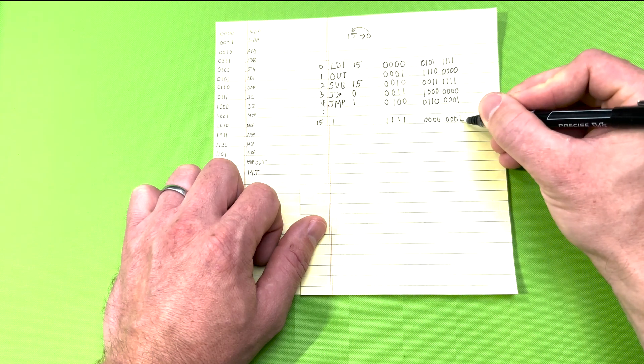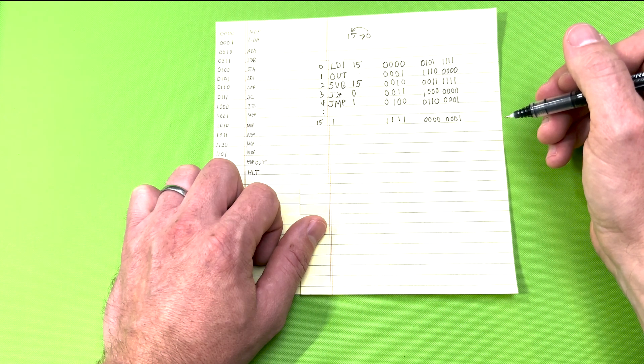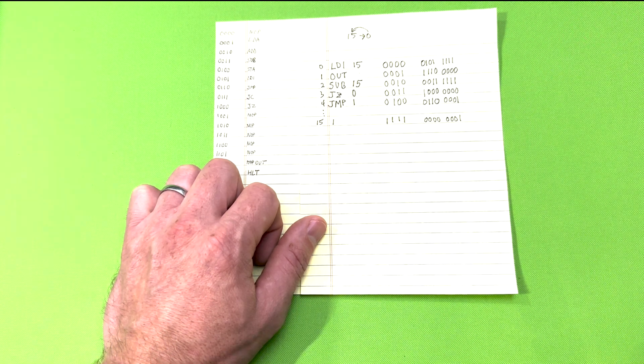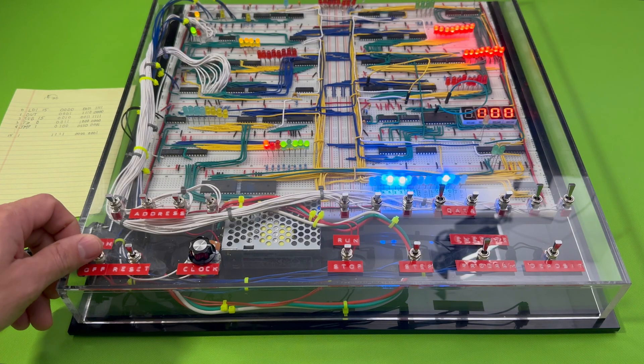Now that we have our program and machine code instructions, let's input this assembly code, machine code into the computer. Power it on and switch to program mode.